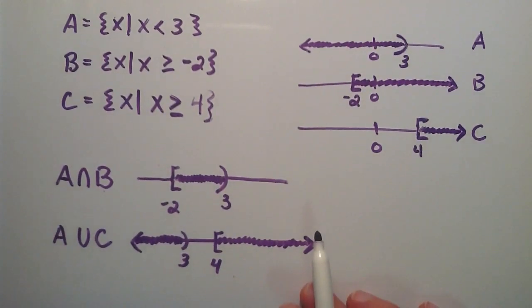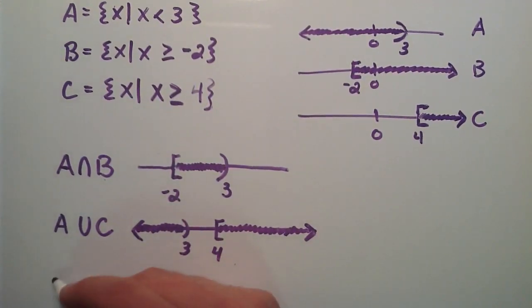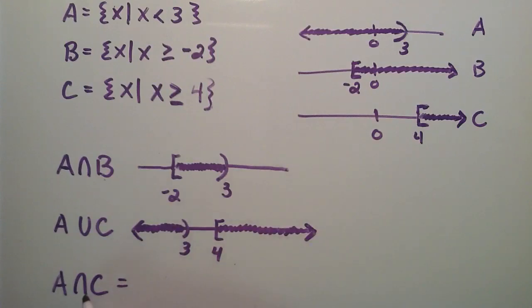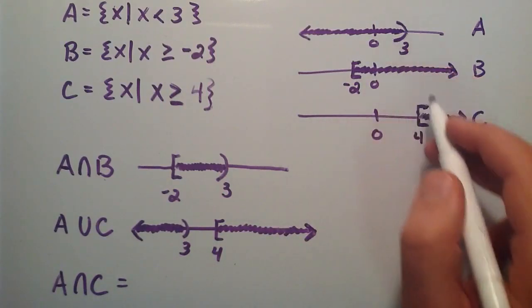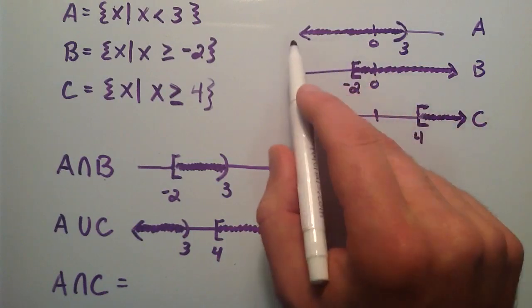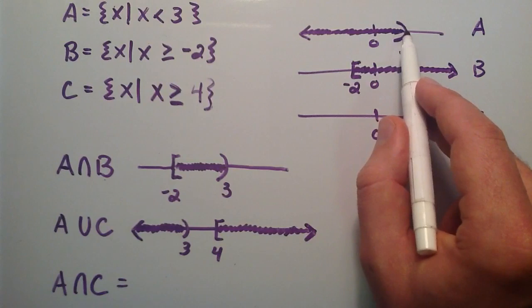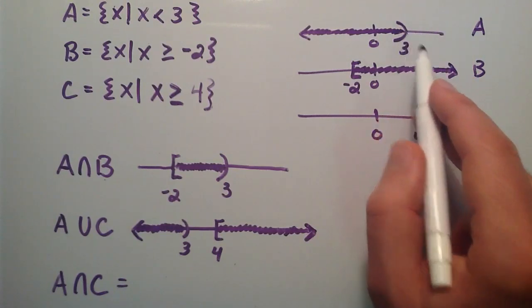What if we did something like A intersect C? We're looking for the intersections, all the elements that A and C have in common. A has all the numbers from negative infinity all the way up to, but not including 3, and none of those numbers are in C. C starts at the number 4 and goes all the way up to positive infinity, and none of those numbers are included in A.